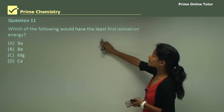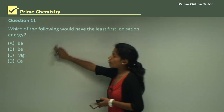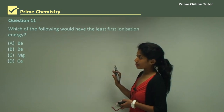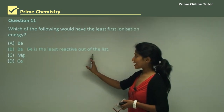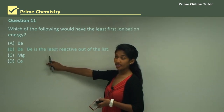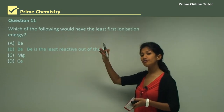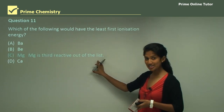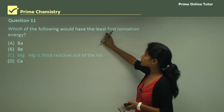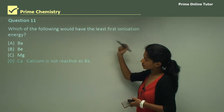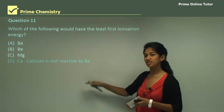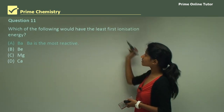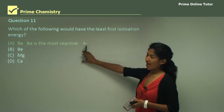Question 11 is a multiple choice question: which of the following would have the least first ionization energy? The options are barium, beryllium, magnesium, and calcium — all Group 2 elements. Beryllium is at the top of the group and is the least reactive. Barium is towards the bottom and is the most reactive, meaning it has the least first ionization energy. Therefore, the correct answer is barium.